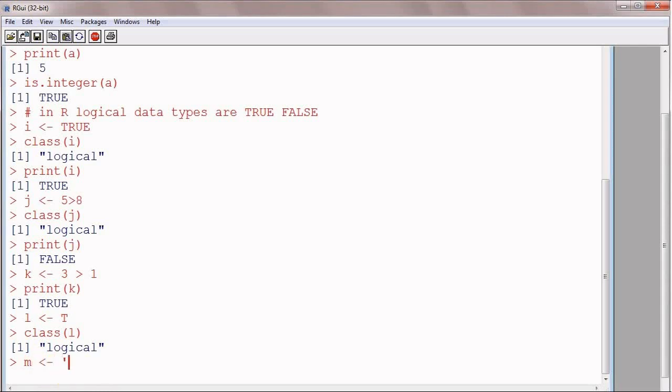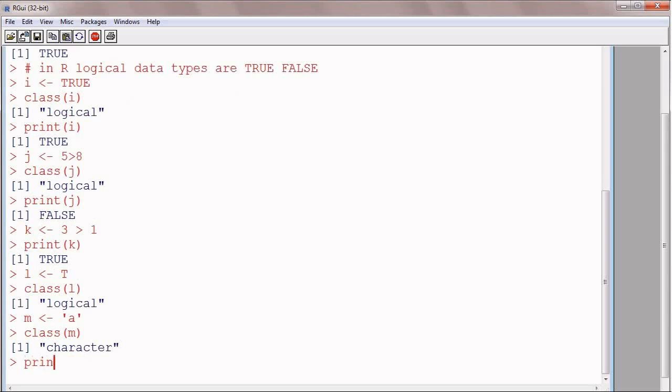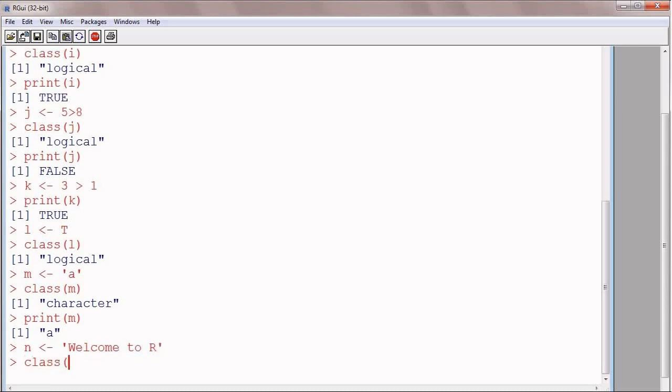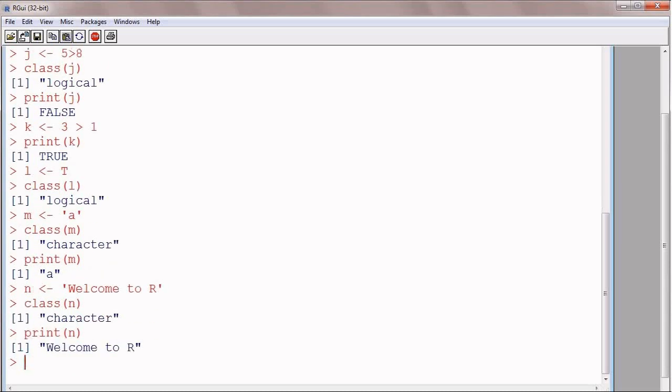Now M is assigned A, a single character, and class of M should be character, and if we print M, it will show A within quotes. N is assigned welcome to R, so this is a string of characters. Class of N is character, and if we print it, it will be welcome to R, of course.